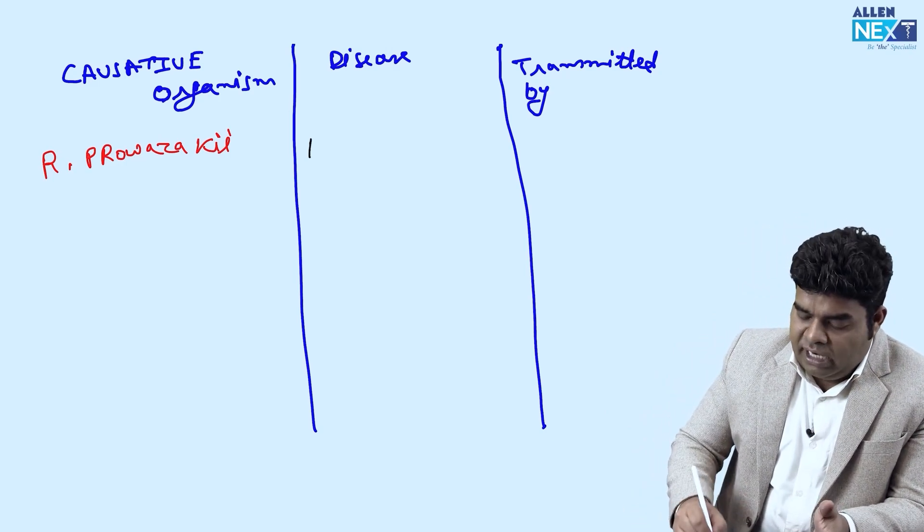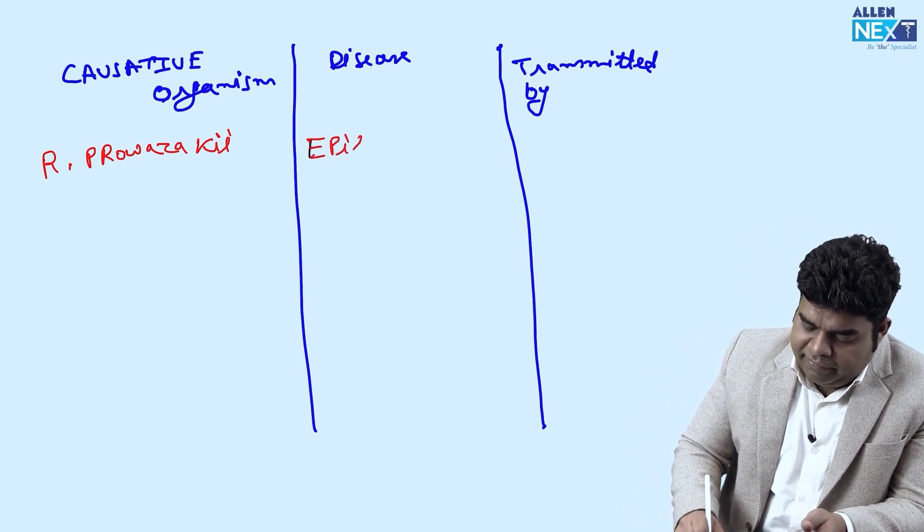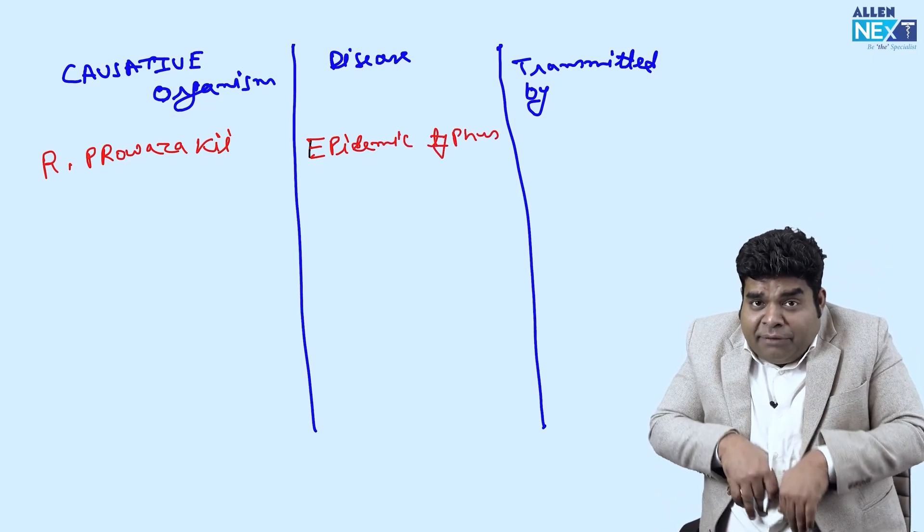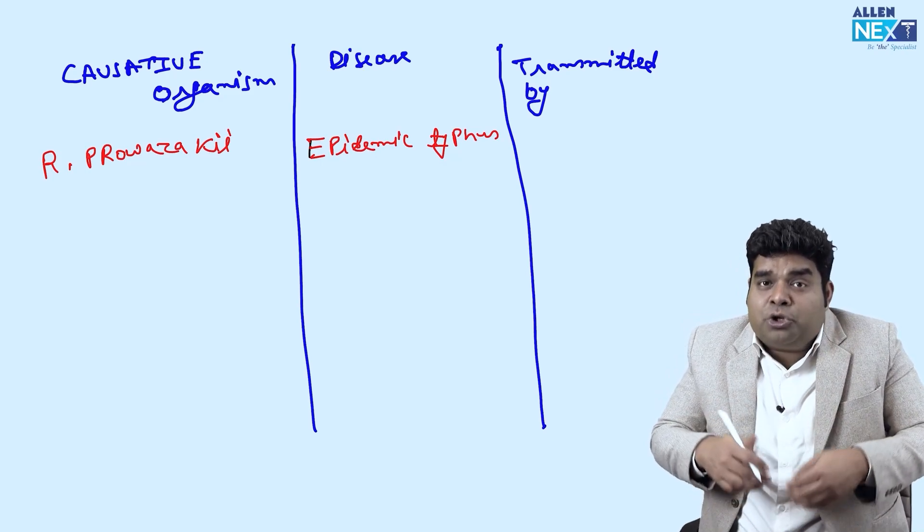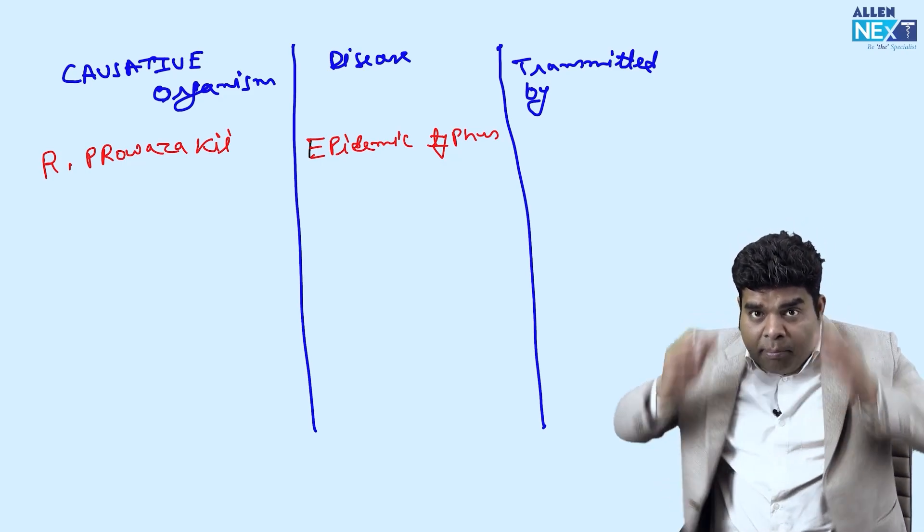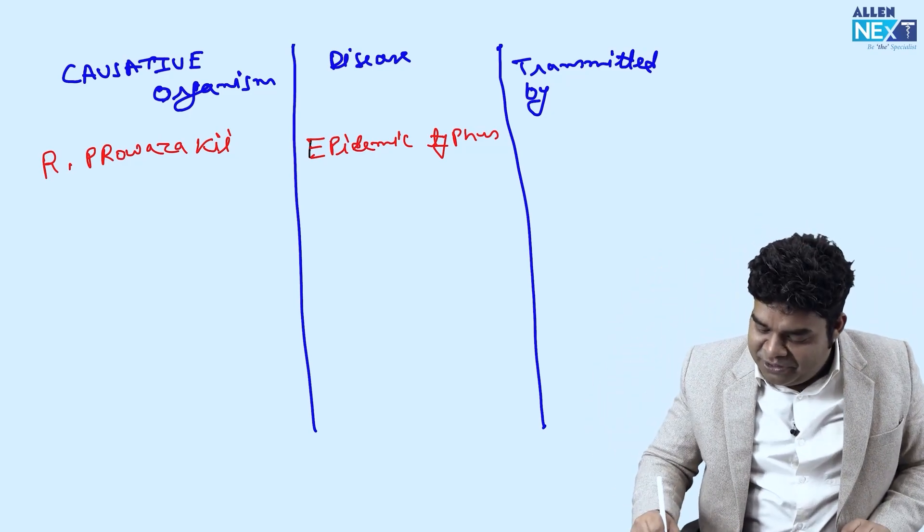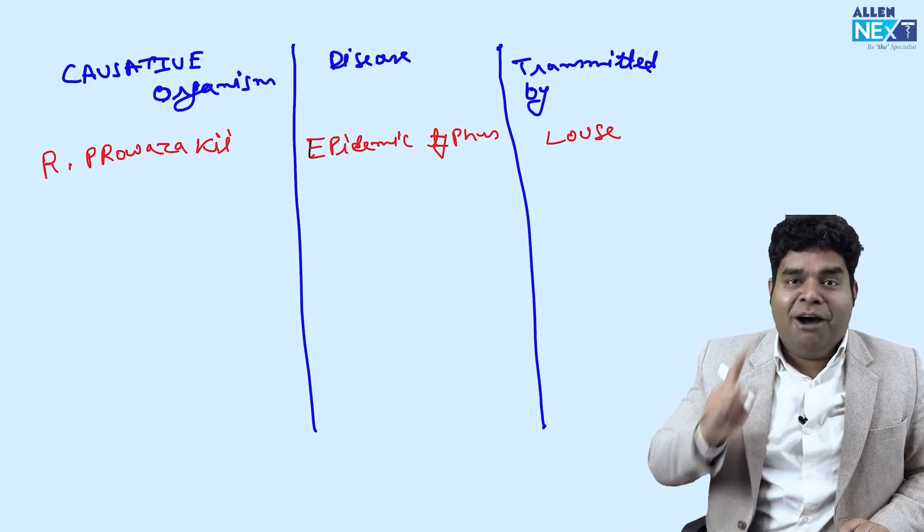So Rickettsia provazeki causes epidemic typhus. And we have read it, endemic typhus, local hero, domestic hero, chota bheem, rat flea. But epidemic typhus by louse, remember? So transmitted by louse.